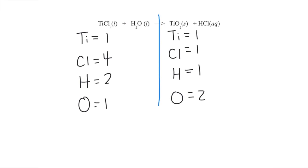Let's start moving down our list. Titanium is already good — we have one on each side, those match. Down here we have four chlorines and one chlorine, those don't match. So I'm going to put a four in front of this compound on the right. Putting the four in front multiplies everything in that compound by four, giving me four chlorines and four hydrogens. So I update those counts to four and four.